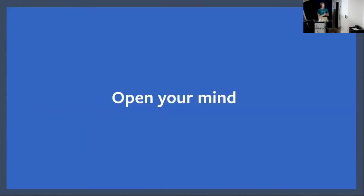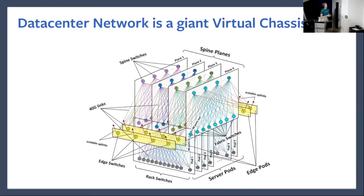I want to step back for a minute. I've been talking about virtual chassis — putting switches into a rack, wiring them up. But let's think about the data center itself. The data center itself is effectively a virtual chassis. Look at this big picture we like to show around: this is effectively a chassis. You have your edge pods, your server pods as your line cards, and your spine plane as basically the backplane of your switch.